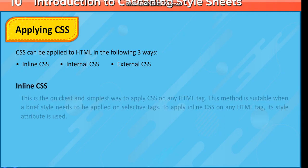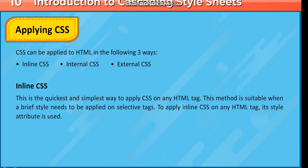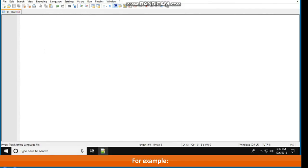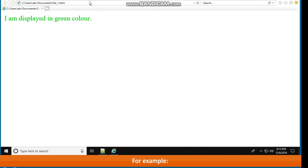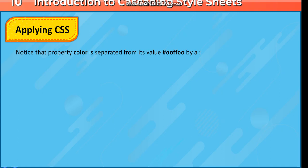Inline CSS: This is the quickest and simplest way to apply CSS on any HTML tag. This method is suitable when a brief style needs to be applied on selective tags. To apply inline CSS on any HTML tag, its style attribute is used. For example: <p style="color: #00ff00">I am displayed in green color</p>. Notice that property color is separated from its value #00ff00 by a colon.